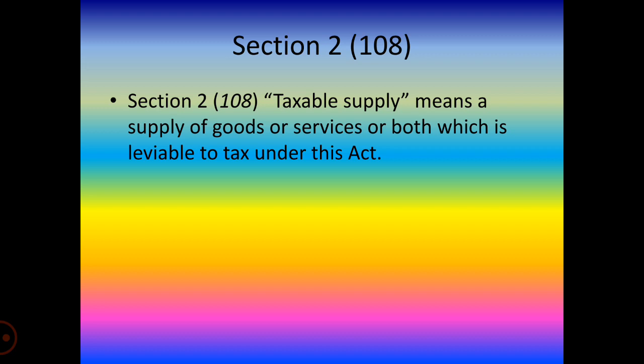Moreover, a few exceptions have been provided in Schedule 3, which relates to the negative list under GST. These are activities or transactions which shall be treated neither as supply of goods nor as supply of services. These must be read with Section 7, subsection 2, clause (a) of the CGST Act, which mentions a few services provided by one person to another that shall not be categorized as supply of goods or supply of services.